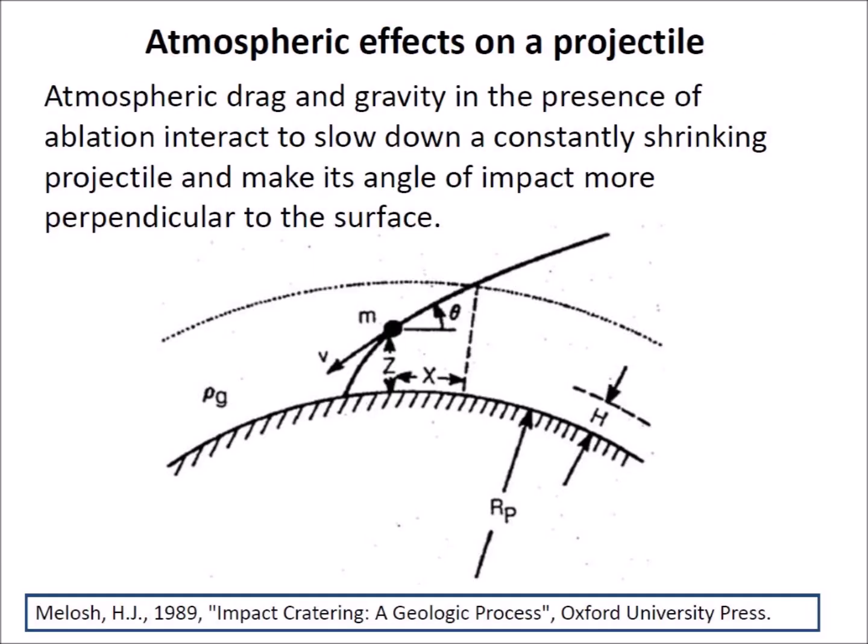It is known that atmospheric drag and gravity in the presence of ablation interact to slow down a constantly shrinking projectile and make its angle of impact more perpendicular to the surface. This video examines the premise that the ice boulders ejected from the Laurentide Ice Sheet survived reentry through the atmosphere without completely melting.